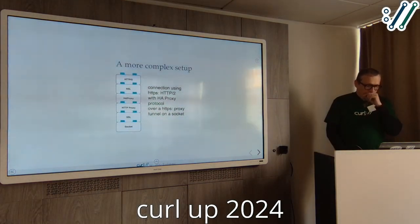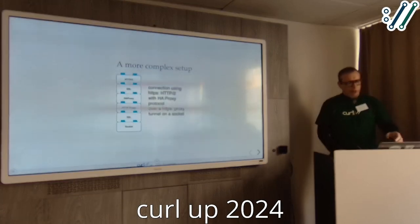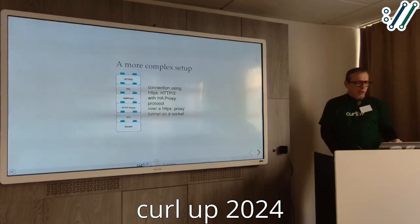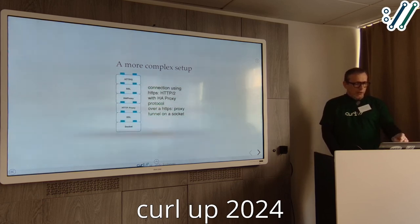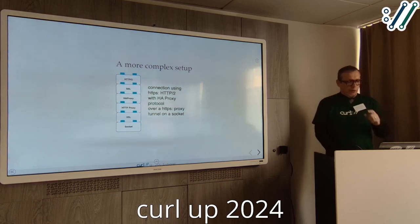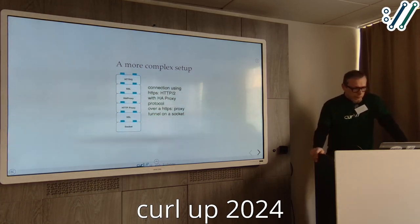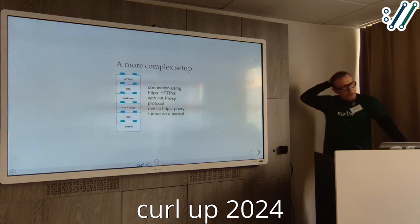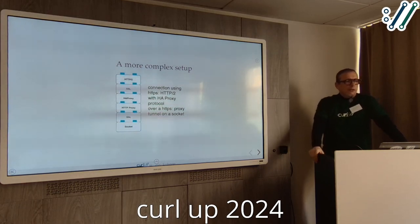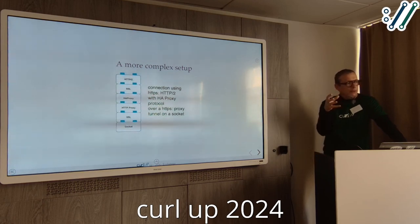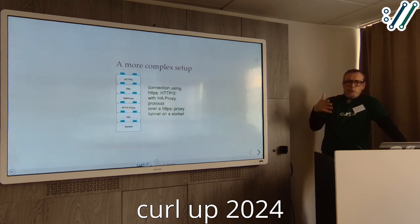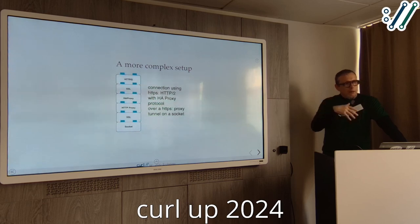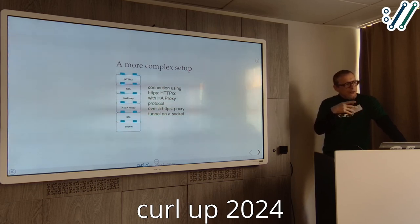Here is a more complex setup: an HTTP/2 connection using SSL — so HTTPS — with an HA proxy protocol, talking via a proxy that is also spoken to with SSL over a TCP connection. The advantage is not only that we can combine different implementation pieces. We now have more or less one place in curl which sets up the filter stack based on configuration, and the rest of the code uses send-receive without concerning itself with all these options and setups.